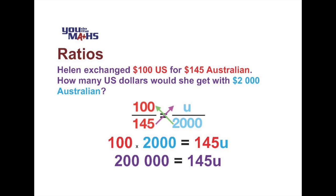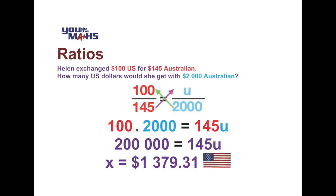To find the unknown value U, we divide both sides by 145. Doing that, we get 200,000 divided by 145, which equals $1,379.31 — and that of course is in US dollars.